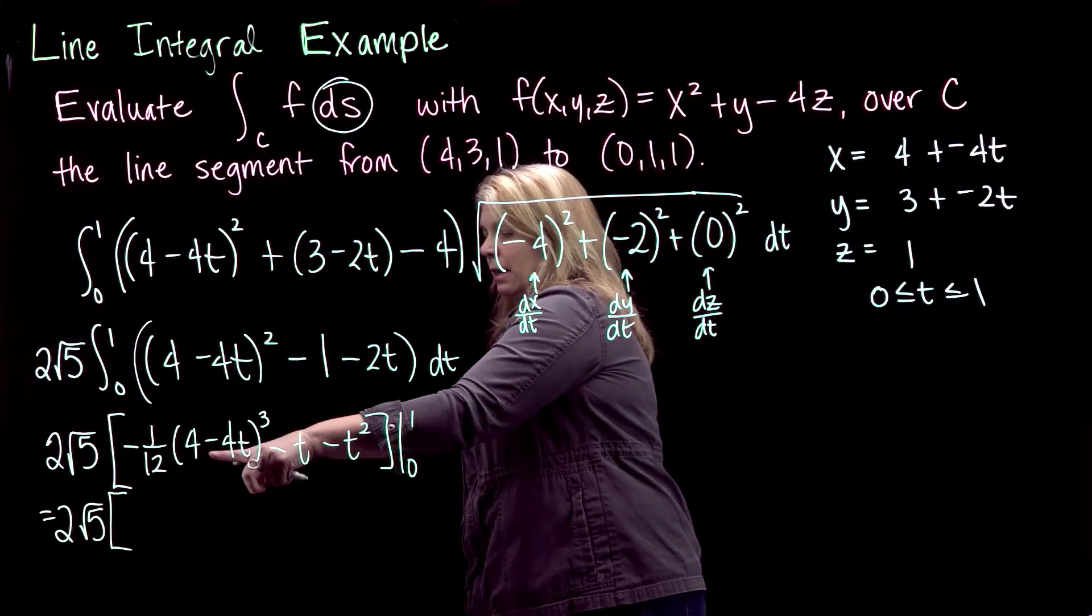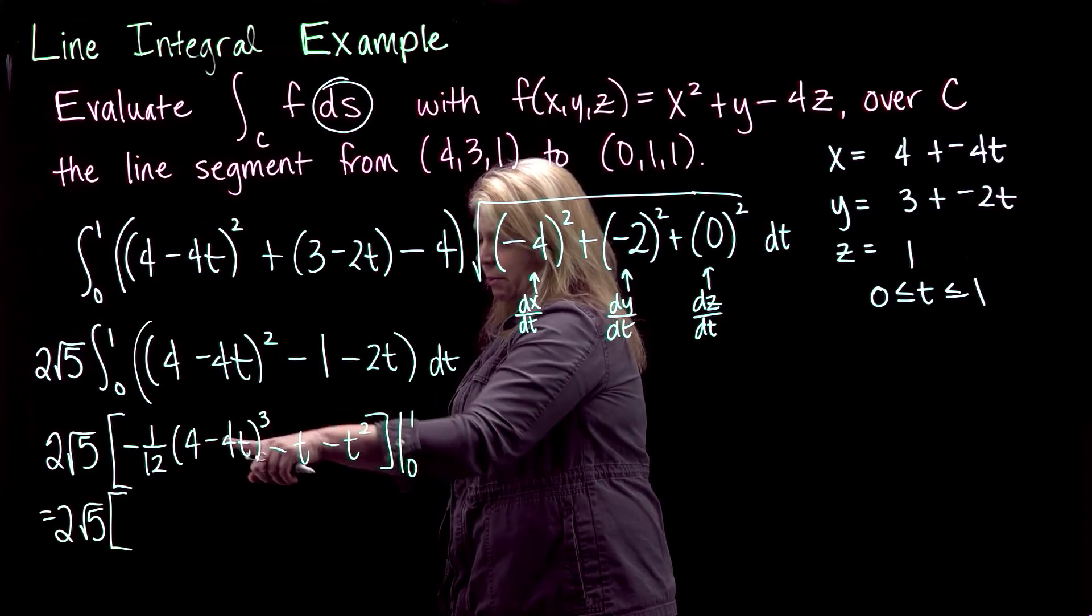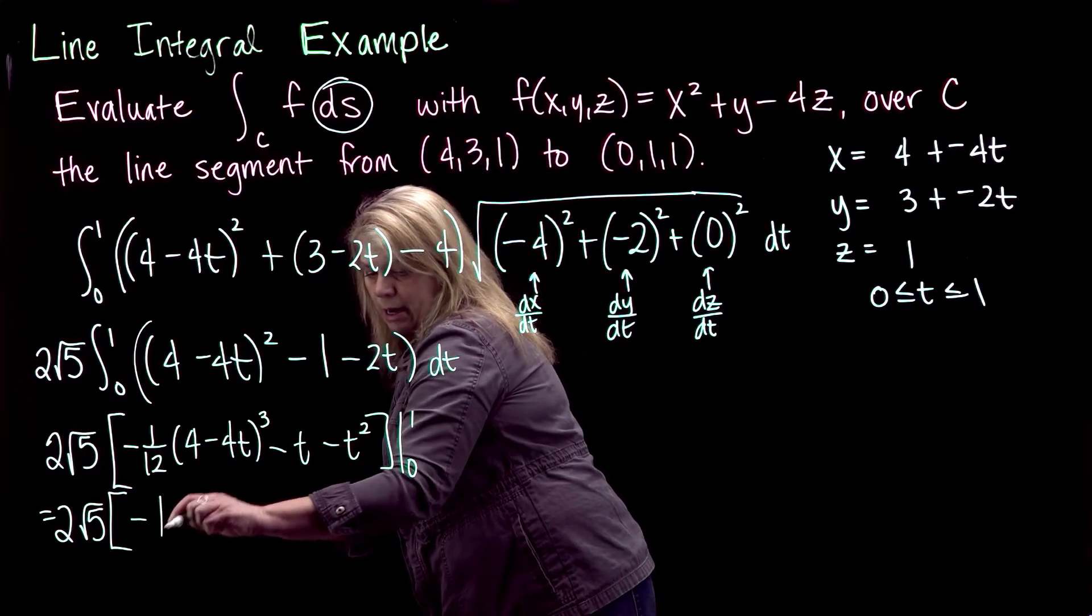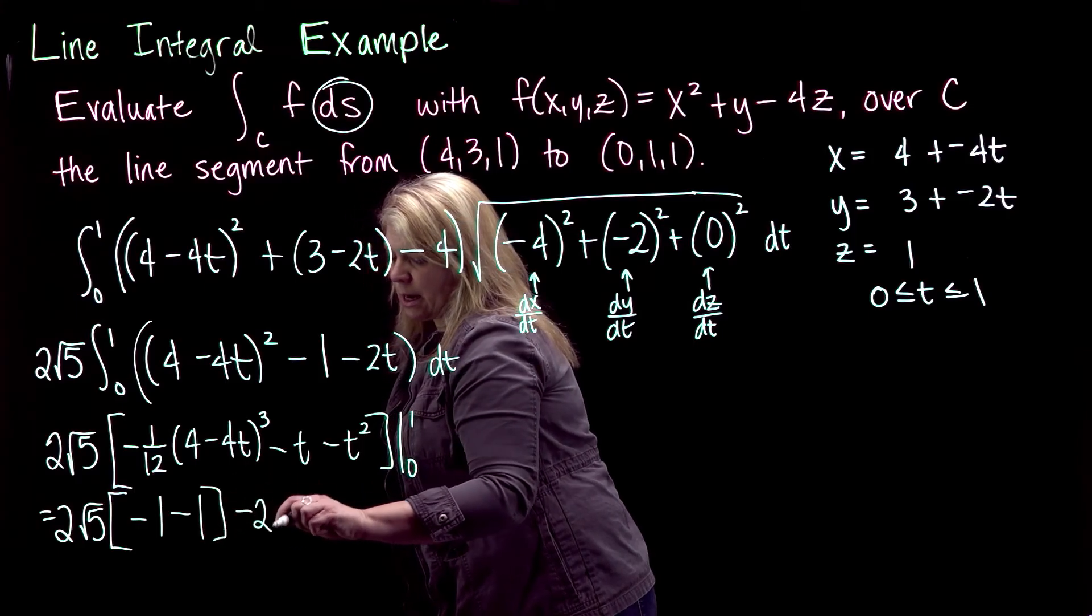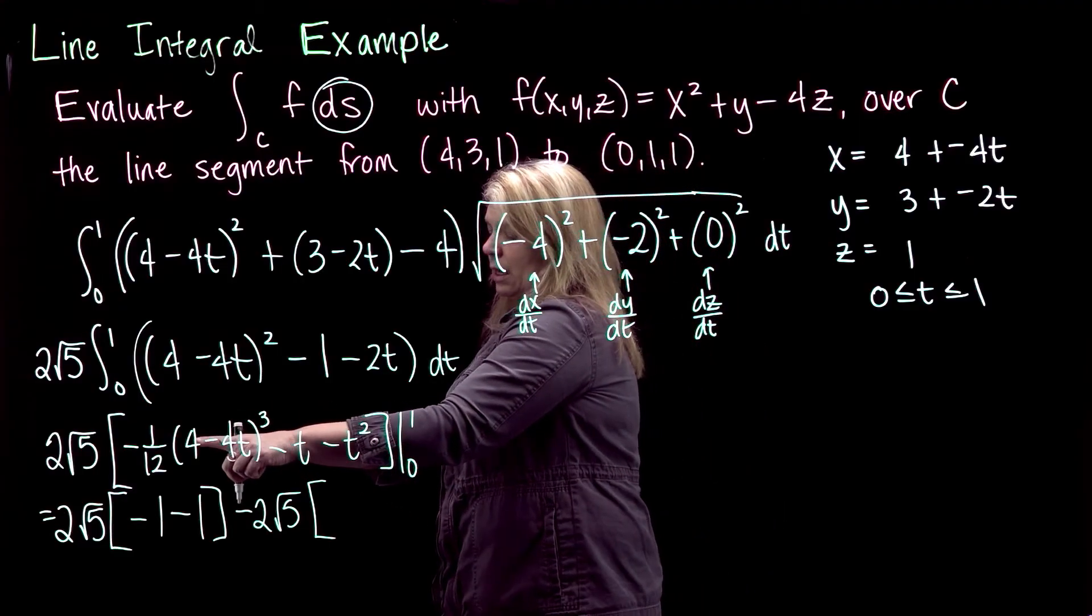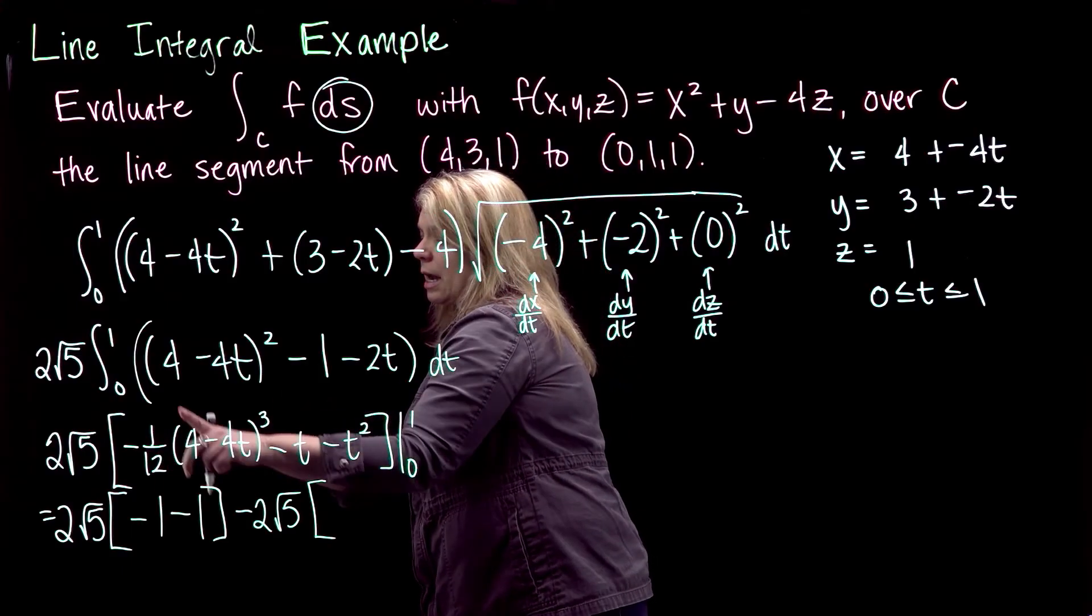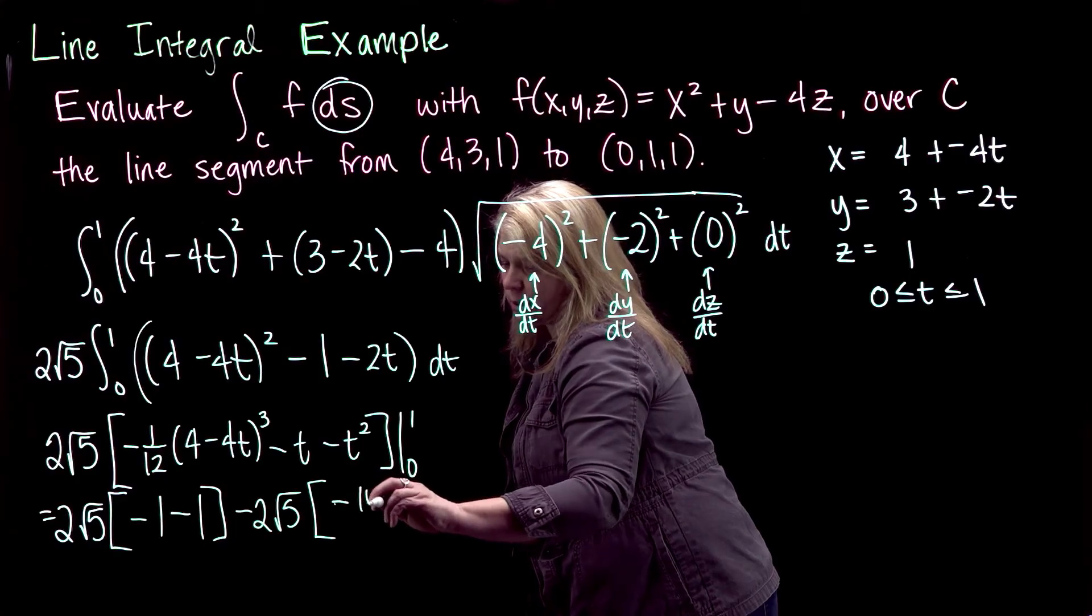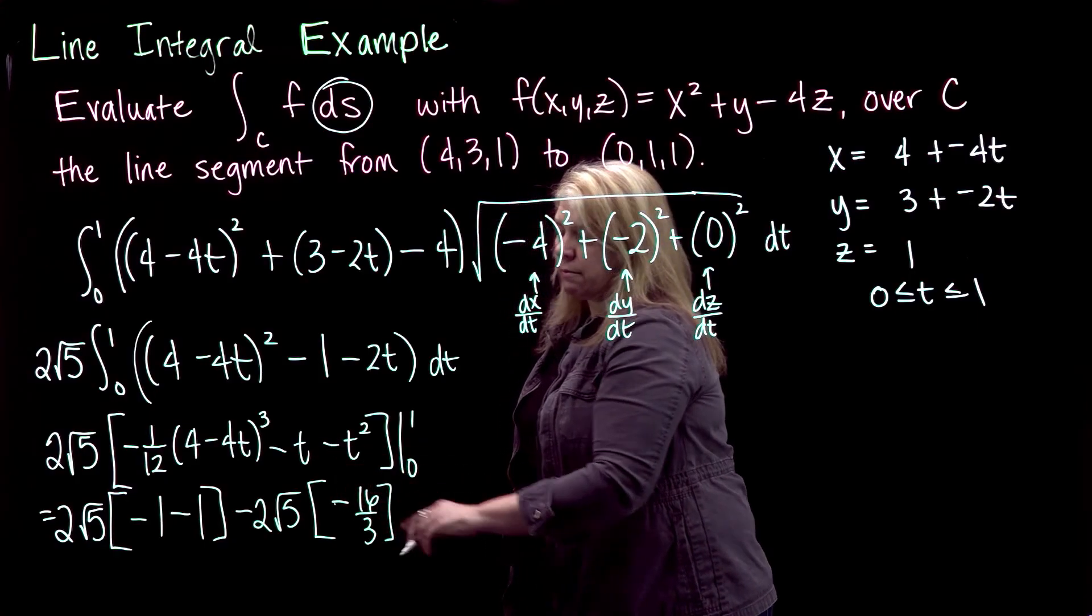Alright, so when I put in 1, this whole expression here will be 0, I'll have 4 minus 4 times 1, so that'll be 4 minus 4, that'll all be 0 there. So I'll just have negative 1 minus 1² will be another minus 1, and then minus 2√5 times, when I put in 0, here I'll have 4³, so 64 times the negative 1/12 out front will be negative 16/3, and then when I put in 0, both of these terms will be 0.